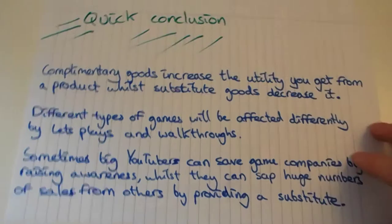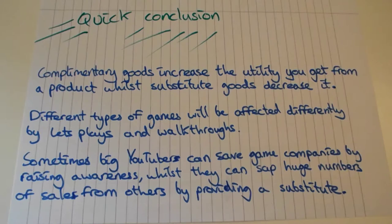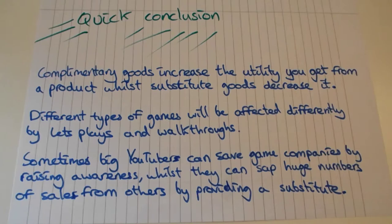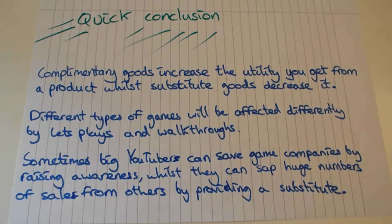Complementary goods increase the utility you get from a product, while substitute goods decrease it. Different kinds of games are going to be differently affected by let's plays and walkthroughs because those games are meeting different needs. Sometimes big YouTubers can save game companies by raising awareness — for example, the whole reason Flappy Bird became popular was because PewDiePie decided to play it in one of his videos and it went viral. But conversely, big YouTubers can actually sap huge numbers of sales by providing a substitute, like That Dragon Cancer and Firewatch for example.